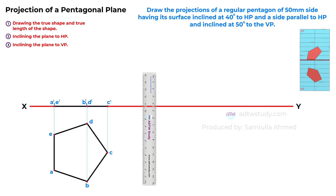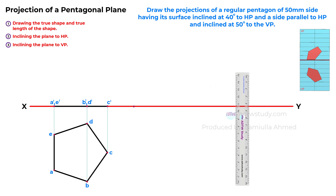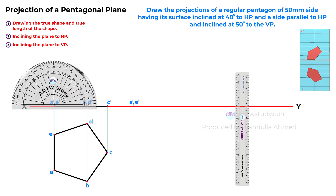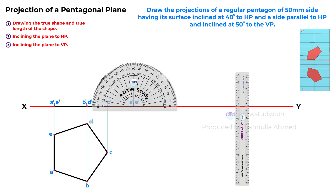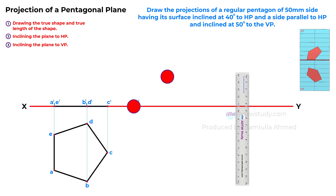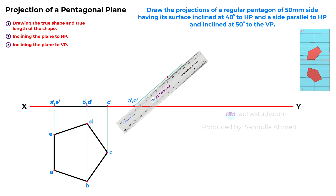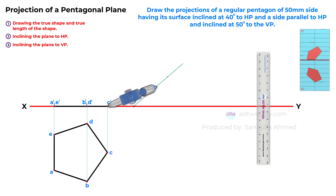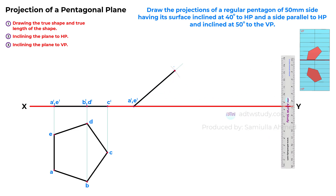We will move on to step 2, which is to incline the plane at 40 degrees to horizontal. To do so, we will first incline the front view of the plane at 40 degrees, and using its projections we will draw its top view below the reference line. Mark a point on the reference line, designating it as A dash, E dash. Using a protractor, mark a point at a 40 degree angle from this reference point and draw a line connecting these two points to establish the inclination. Adjust the compass to the length of the front view and cut an arc, resulting in point C dash. Then measure the distance between these two points and mark it as shown, determining points B dash and D dash. This completes the front view of the plane when inclined to the HP.